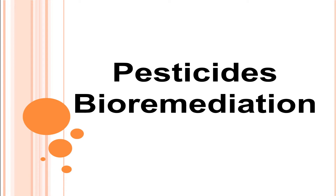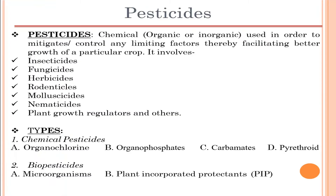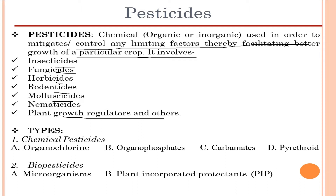There are a lot of factors on which pesticide bioremediation depends. First, let's talk about what pesticides are in general. These are chemical substances, which can be organic or inorganic, used to control any limiting factor, thereby facilitating better growth of a particular crop. They include insecticides, fungicides, herbicides, rodenticides, molluscicides, nematicides, plant growth regulators, and others.